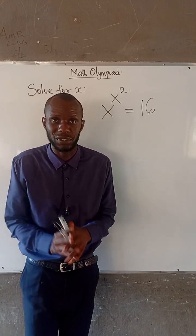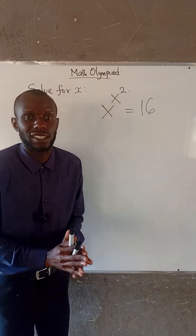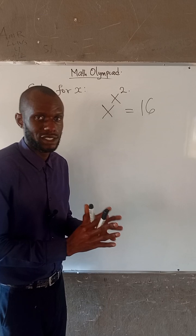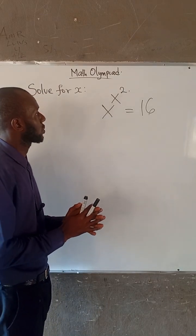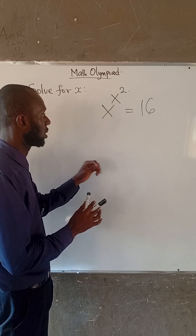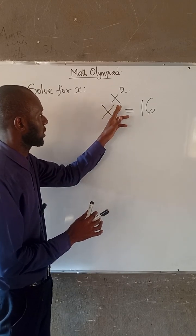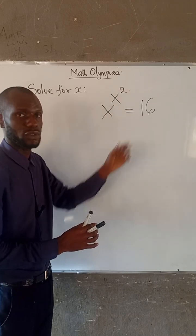Hello everyone, welcome to Radiant Minds Academy. In this video, we will provide the solution to this Math Olympiad question. We are given: solve for x, where x to the power of x to the power of 2 equals 16.